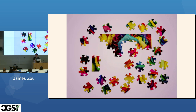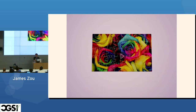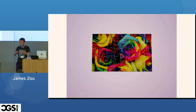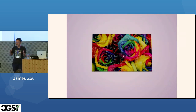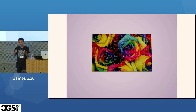The goal of spatial omics is to put these puzzle pieces together so you can see cells in their original native environment — knowing who their neighbors are and their microenvironment. This provides much richer information around understanding the biology of the tissue or disease.